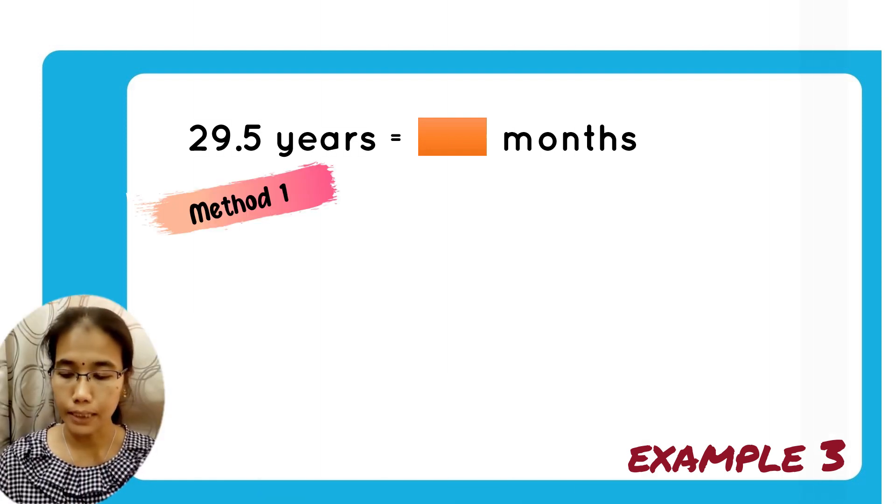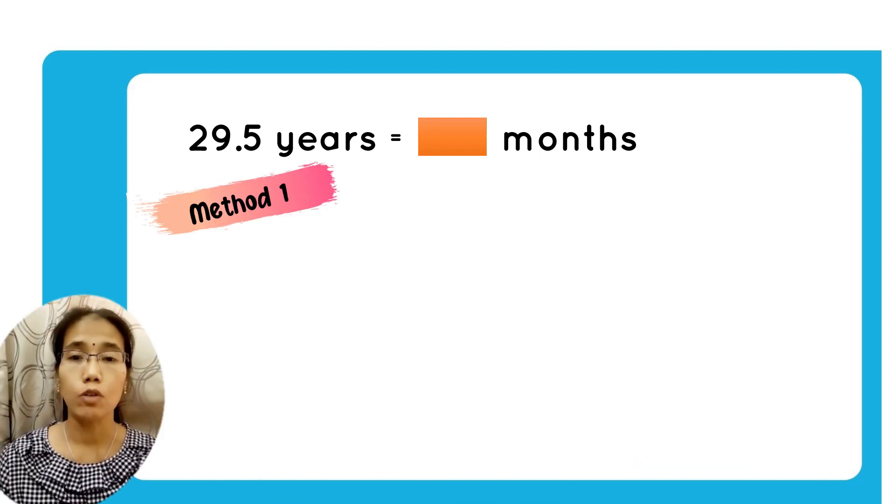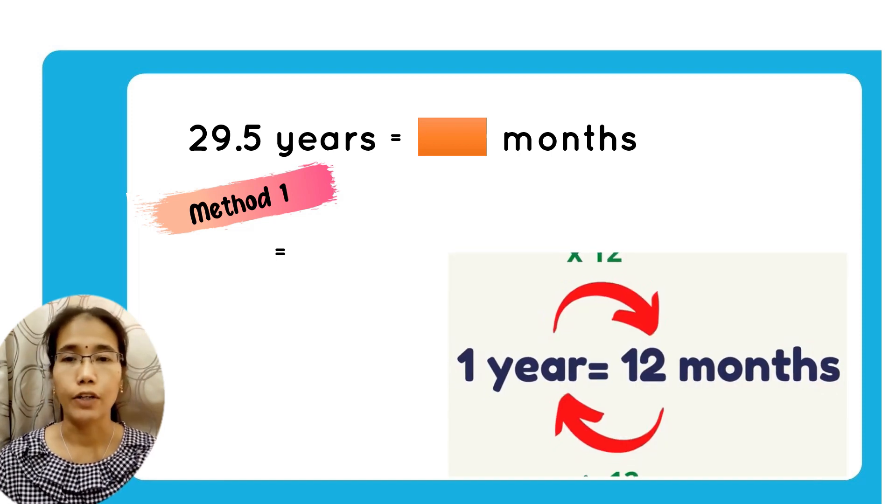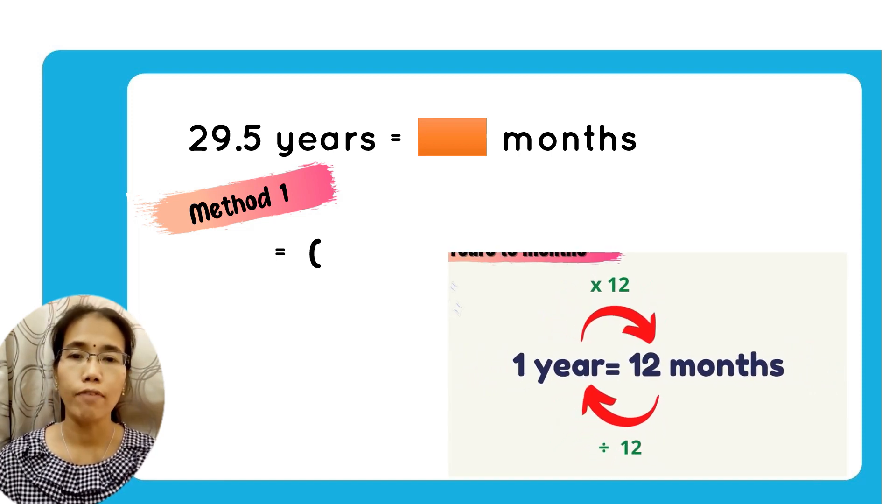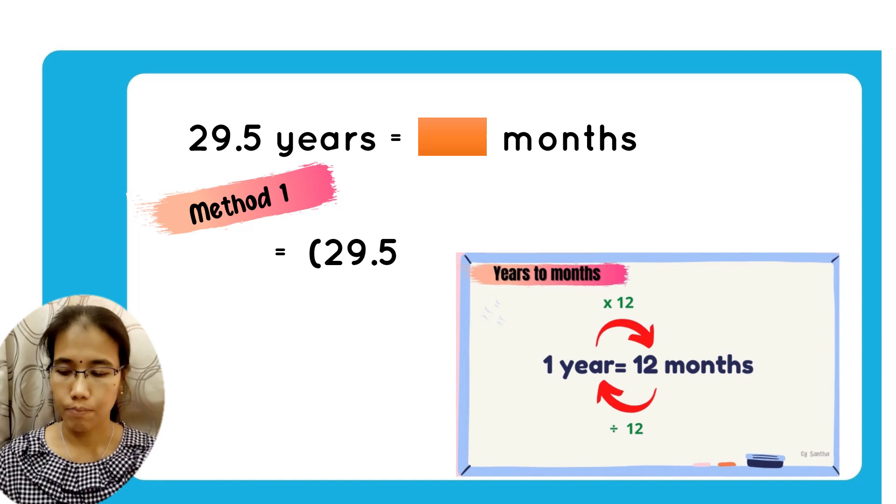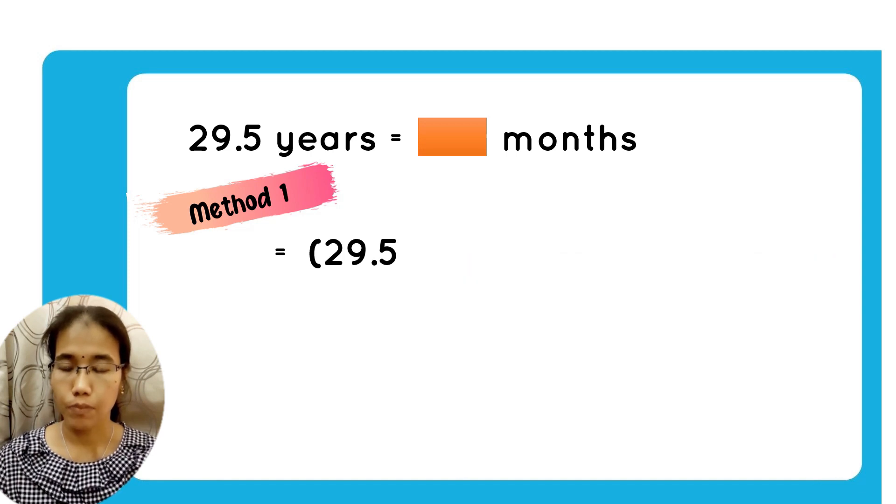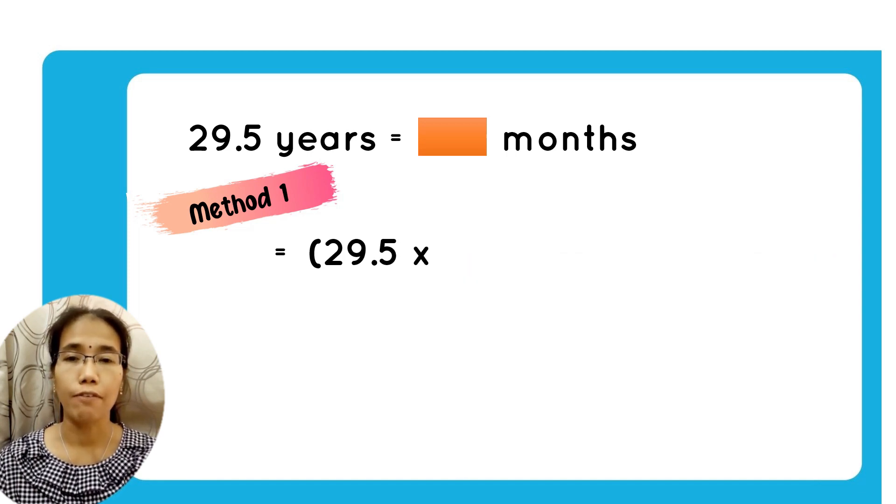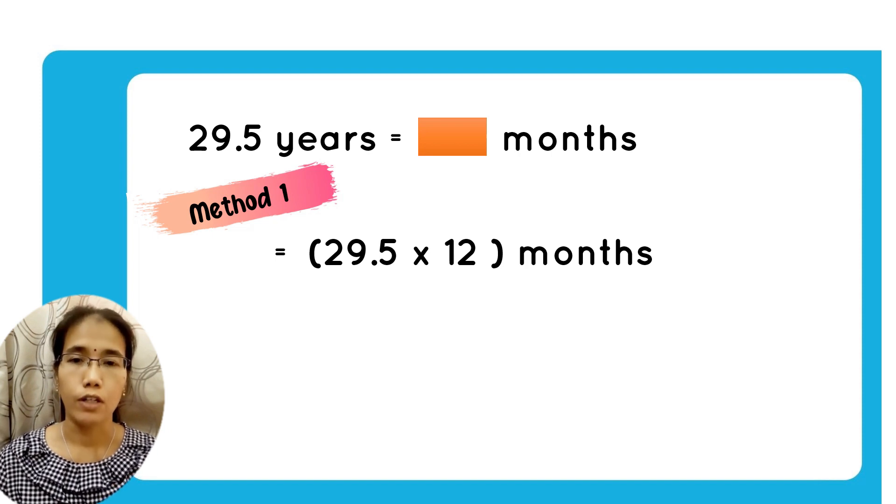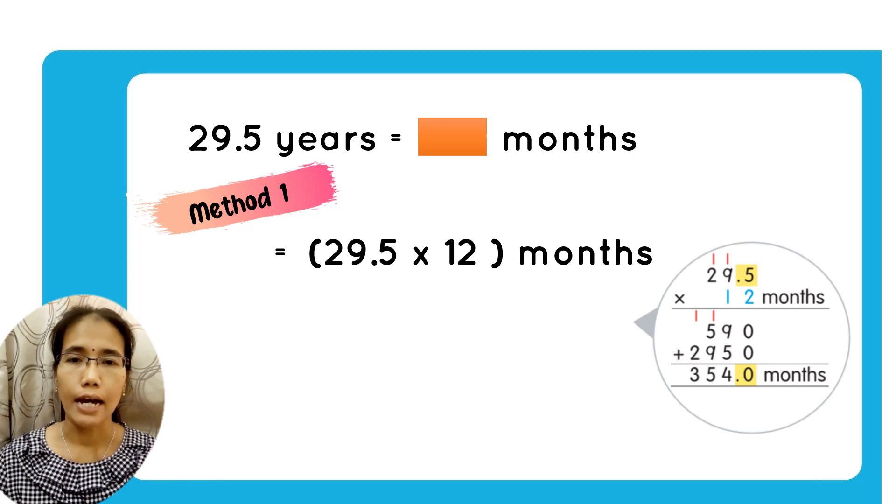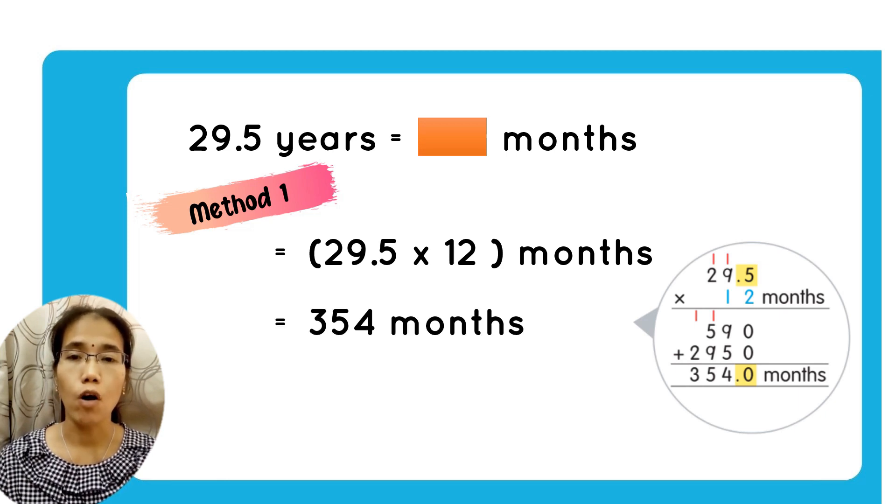Let's move on to another example. Now we will see how to convert year to month. One year is equal to 12 months. We have 29.5 years, convert to months. What you can do is 29.5, you multiply with 12. Multiply as usual, use a standard method and you will get the answer 354 months.